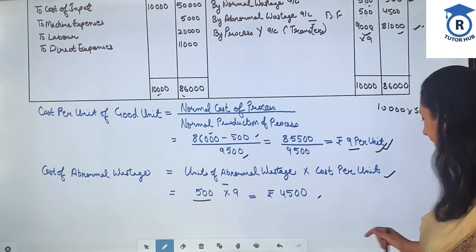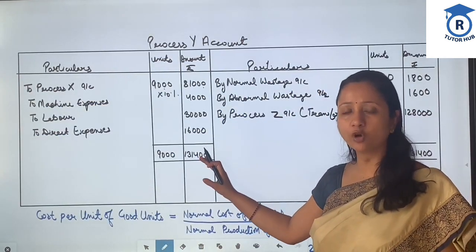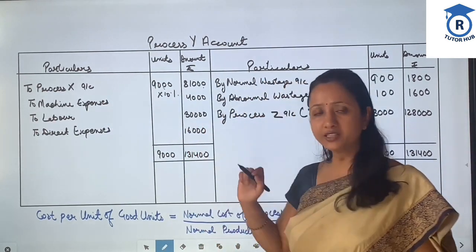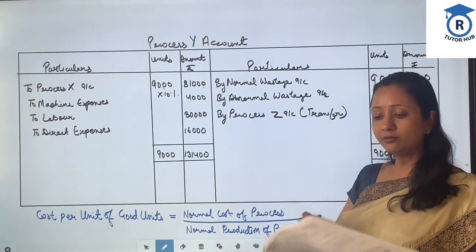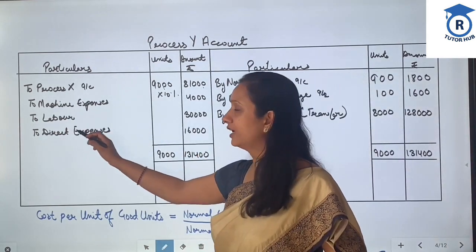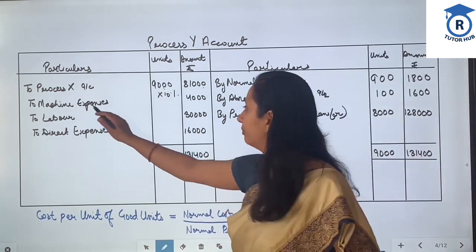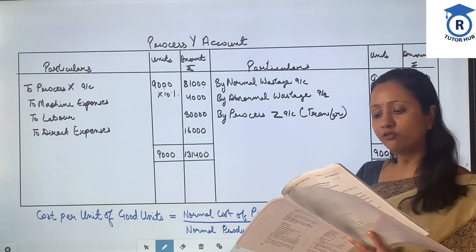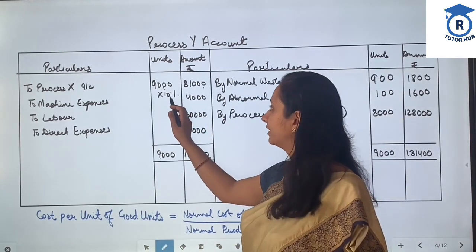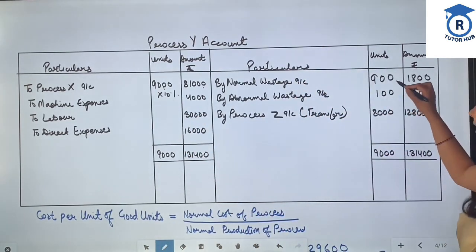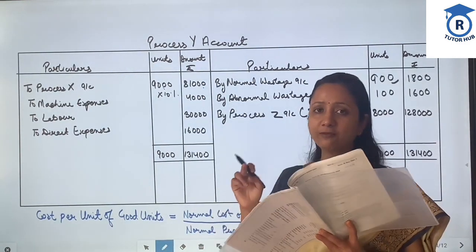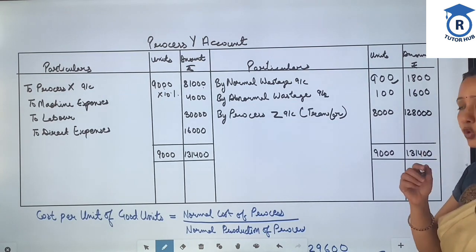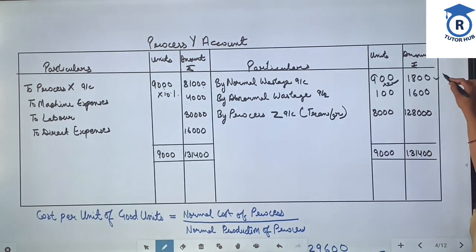Similarly, we will prepare Process Y account. From Process X, 9,000 units arrived worth 81,000 rupees. Now, expenses related to Process Y — machine expenses, labor, and direct expenses — are filled in from the question. Normal wastage is given as 10%, so 10% of 9,000 is 900 units. Scrap value per unit is 2 rupees, so 900 multiplied by 2 gives a scrap value of 1,800 rupees.